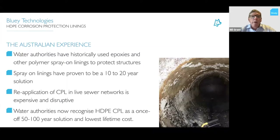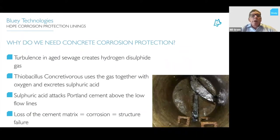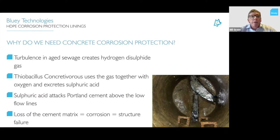Why do we need concrete corrosion protection? In sewage networks, the turbulence of sewage creates a gas called hydrogen disulfide. In the sewer, this gas combines with oxygen and water and is consumed by a little organism called Thiobacillus concretivorus. That organism excretes sulfuric acid, and the sulfuric acid attacks the Portland cement matrix of the concrete.